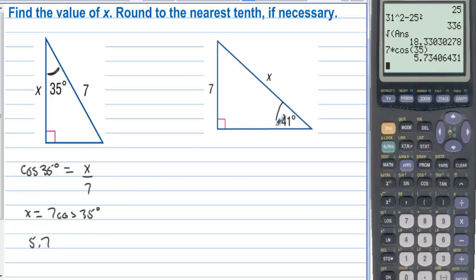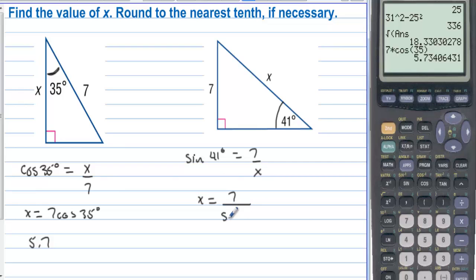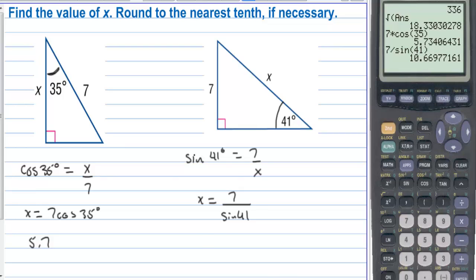On this one, the 41-degree angle is down here, and we have opposite and hypotenuse in relationship to this angle — which is sine. So sine of 41 degrees equals 7 over x. We can multiply by x and divide by sine of 41 degrees: x equals 7 over sine of 41 degrees. With the calculator in degrees, 7 divided by sine of 41 gives us 10.7.